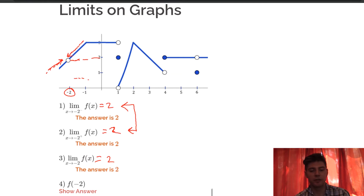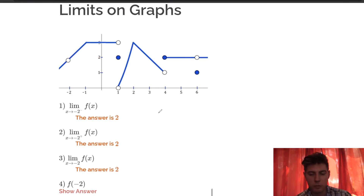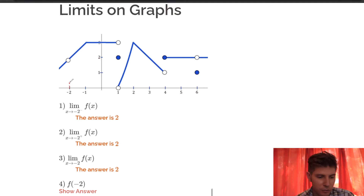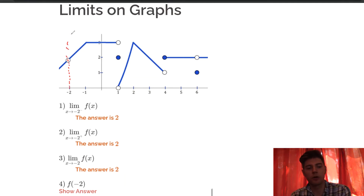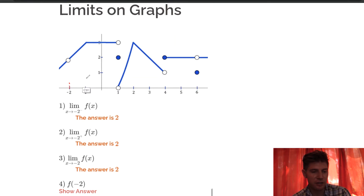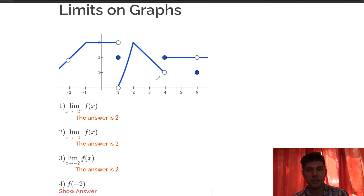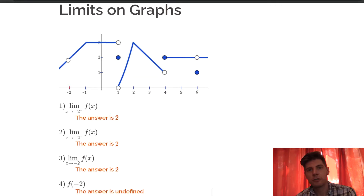Now f of negative 2 means what is the function value at negative 2? If we go to negative 2 and see where the function is defined, it's actually not defined anywhere. There's a hole at negative 2, and there's not another dot filling the hole. If there had been another dot here that would be filling it, but there isn't. So f of negative 2 is undefined.